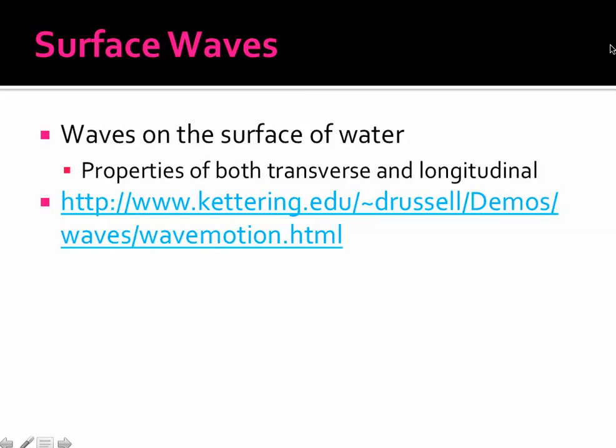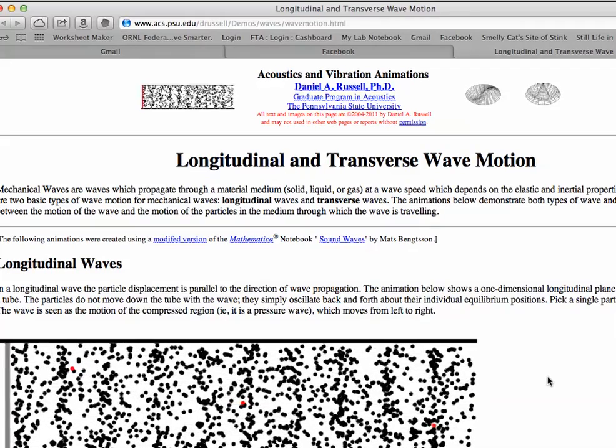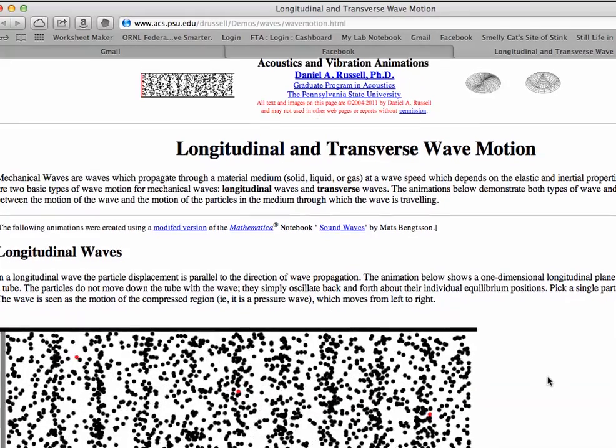There's also surface waves. And these are waves on the surface of water. They have properties of both transverse and longitudinal waves. They move in a circular motion. This website shows some really good examples of what these waves look like.